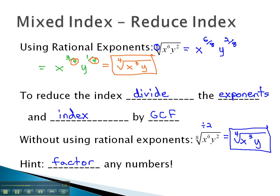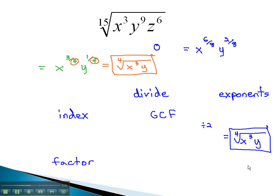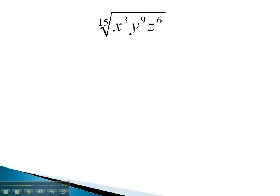Let's take a look at some examples, where we can divide the index and the exponents by the same thing, or the greatest common factor, to reduce the index.